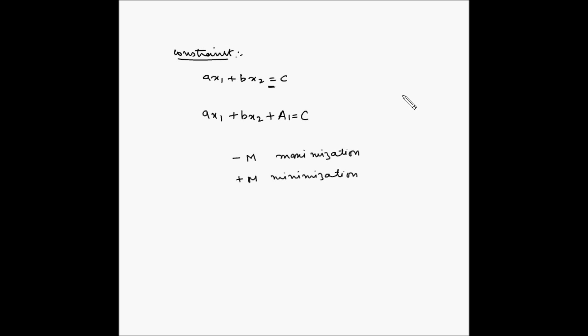These are the basic concepts of how to handle linear programming problems using the simplex method when constraints have a greater than or equal to sign, or simply an equal to sign — also known as the Big M method. In subsequent videos, we will look at examples and solve them using the Big M method.